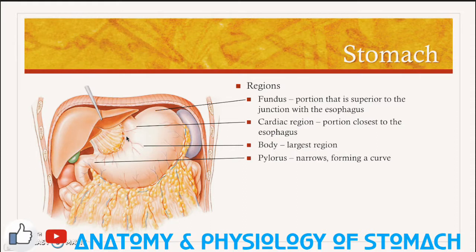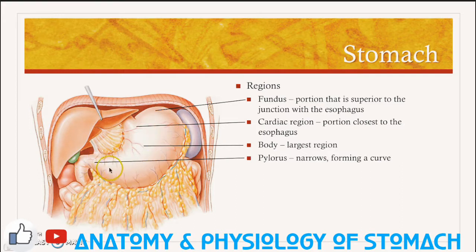The majority of the stomach is the body. As this large portion narrows down to empty into the small intestine, this region is called the pylorus. So this is all the body, and then it narrows down here to the pylorus.